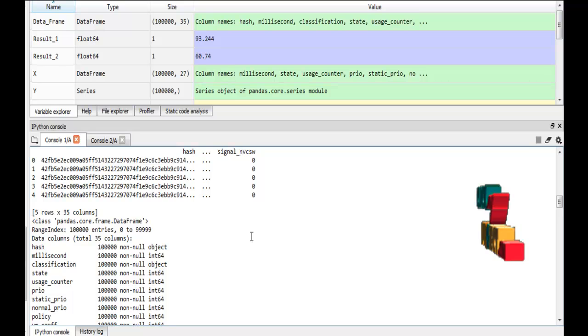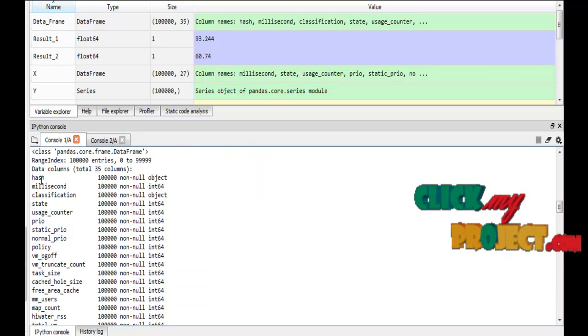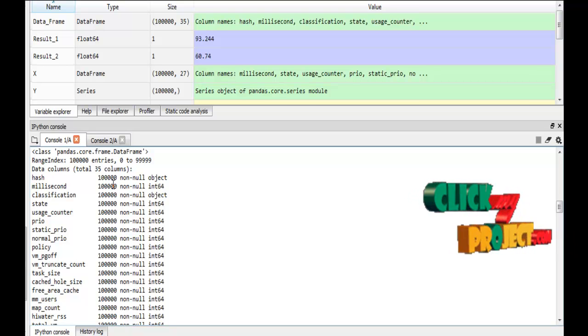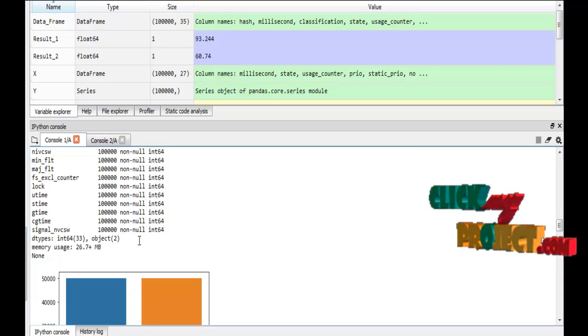This is our dataset. Here, it will display each column, that is attribute, how many rows, and what type, that is data type. Here, hash is the attribute that is the object, that is a string data type. These are our dataset types.